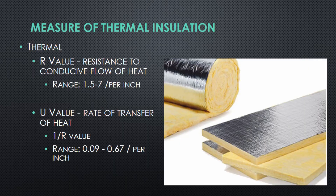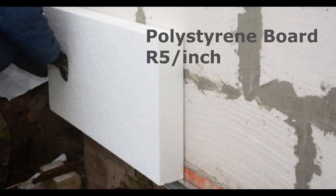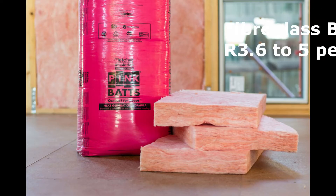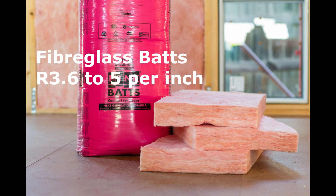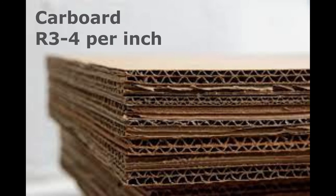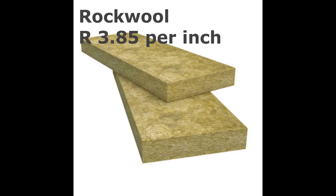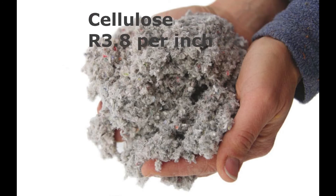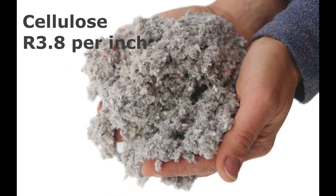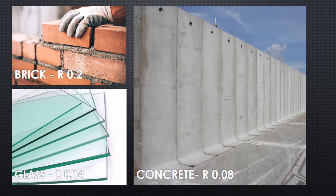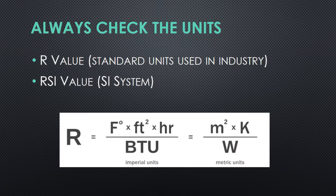Let's look at R-values of some of the most typical materials. Polystyrene board has an R-value of 5; high-density fiberglass batt 3.6 to 5; cardboard 3 to 4; rock wool batts 3 to 3.85; cellulose 3 to 3.8; hardwood 0.71; brick 0.2; glass 0.14; concrete 0.08.